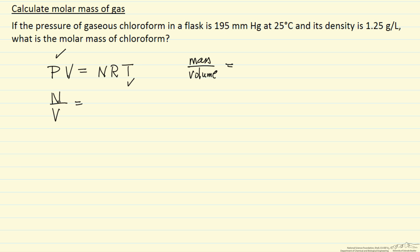The mass per volume or the density is 1.25 grams per liter. The number of moles per volume, just rearranging the ideal gas law, is the pressure over RT.